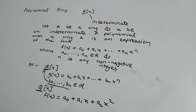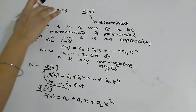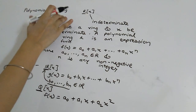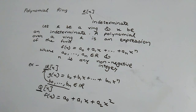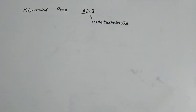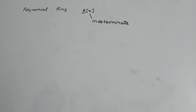Now let's see that as a polynomial ring. In the ring there are two binary operations: addition and multiplication. So now let's perform the addition and multiplication operations.